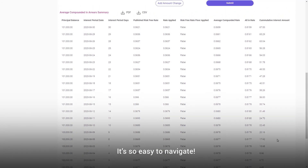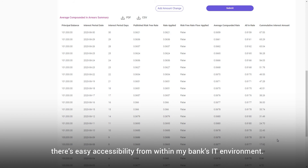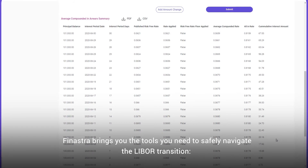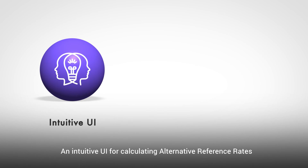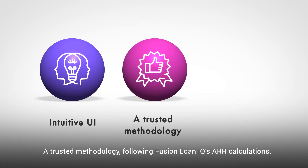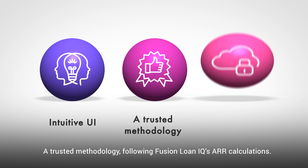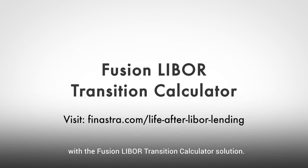It's so easy to navigate. Plus, as the UI is available on premise, there's easy accessibility from within my bank's IT environment. Finastra brings you the tools you need to safely navigate the LIBOR transition: an intuitive UI for calculating alternative reference rates or corresponding accrued interest available on premise, a trusted methodology following Fusion Loan IQ's ARR calculations, and the ability to future-proof your business with a solution that evolves with the market. Set yourself up for transition success with the Fusion LIBOR transition calculator solution.